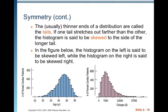The thinner ends of a distribution are called the tails. If one tail stretches out further than the other, the histogram is said to be skewed to the side of the longer tail. The skew is in the direction of the tail, not the peak — people get that backwards all the time. The histogram on the left is skewed left because its tail trails to the left, while the histogram on the right is skewed to the right because the right tail trails out further.